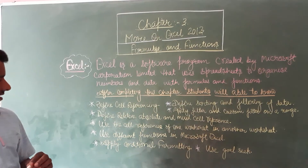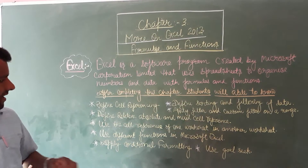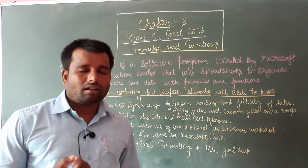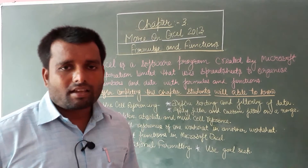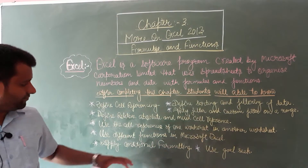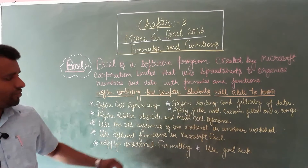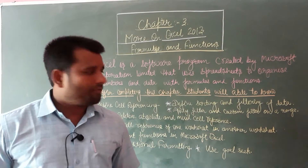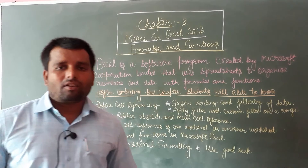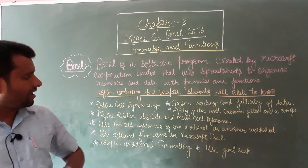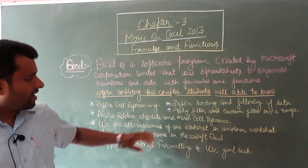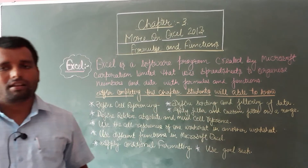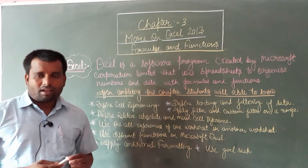Use different functions in Microsoft Excel — Microsoft Excel mein alag alag prakar ke functions ka use kaise hota hai. After that, apply conditional formatting — conditional formatting kaisa karenge. And after that, use Goal Seek. Define sorting and filtering of data — data ko sort karna aur filter karna.